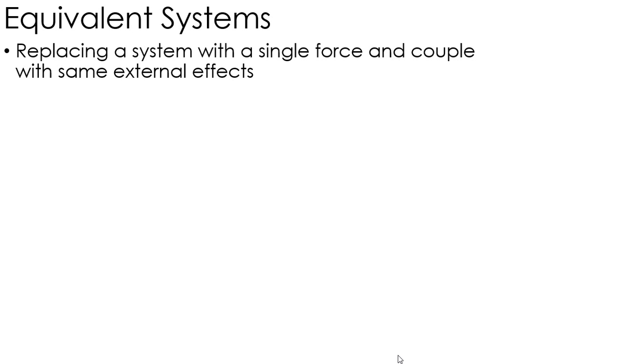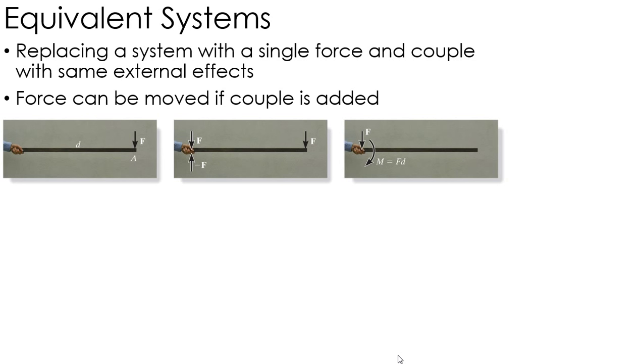So essentially we're trying to move forces and couples to a specific point, so I just have one force and one couple. Now, I can move a force only if I add a couple to balance that force. For example, if I have a straight member here with a force at the end of it, and I want to move it over to where the hand is, at the hand I can place a downward force and an upward force with no change in the system. They cancel each other out.